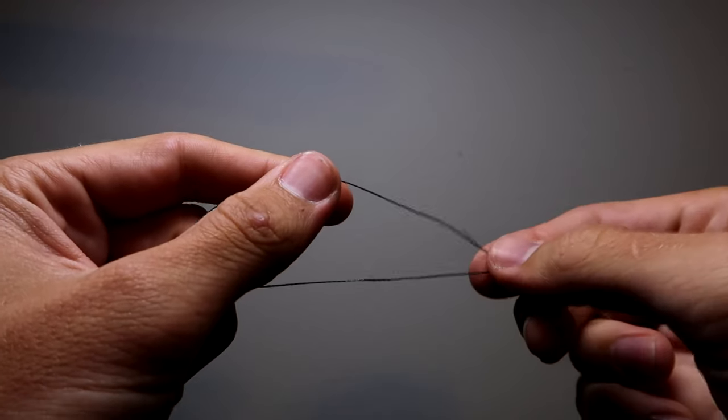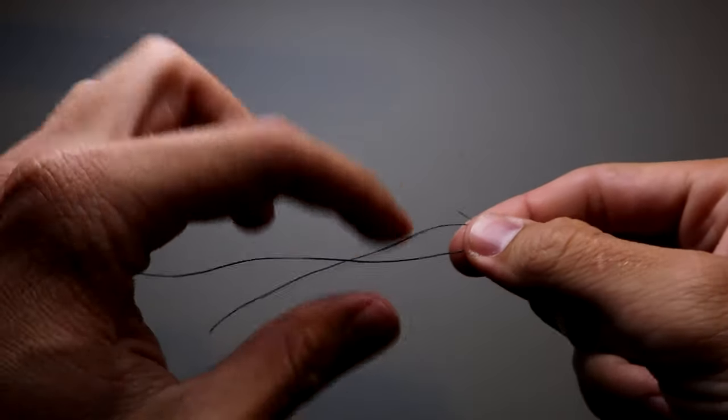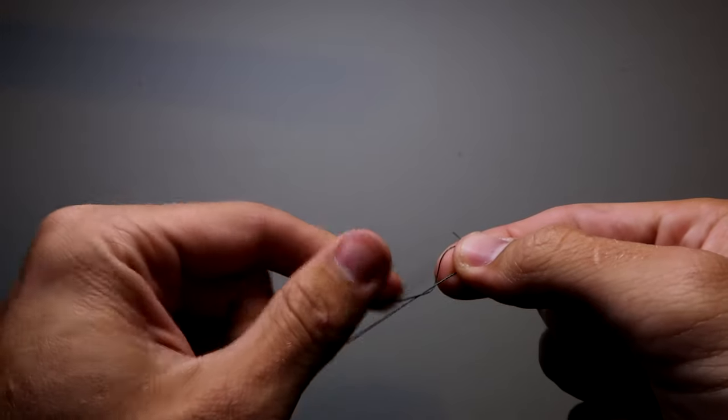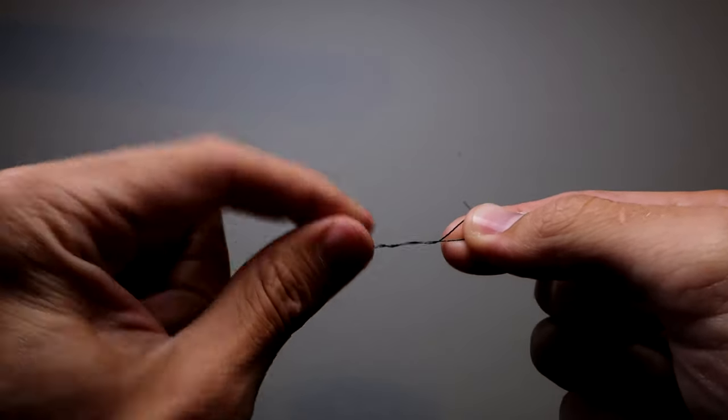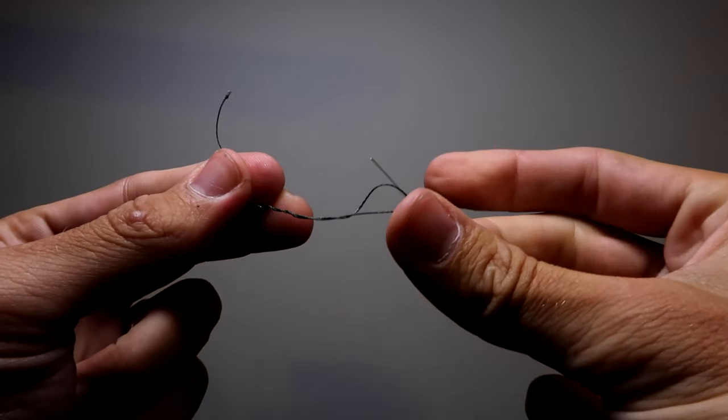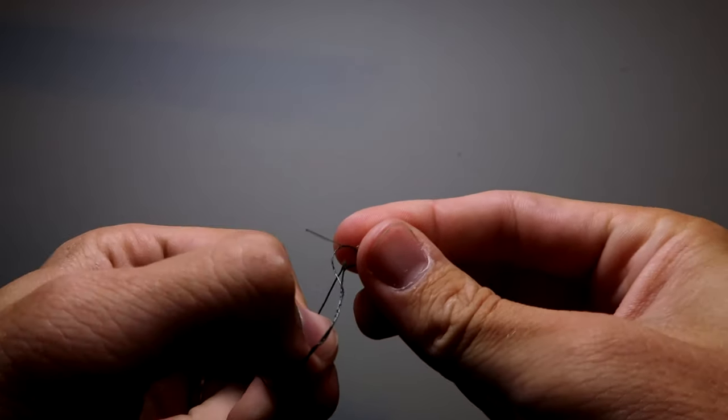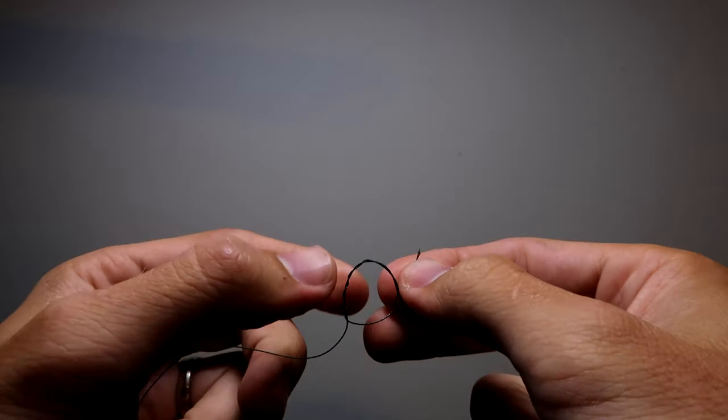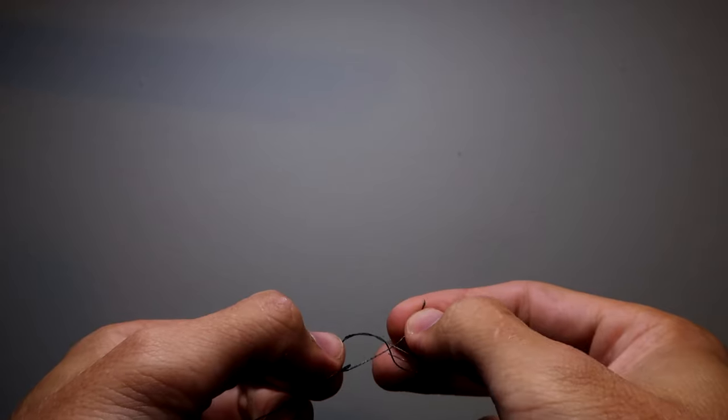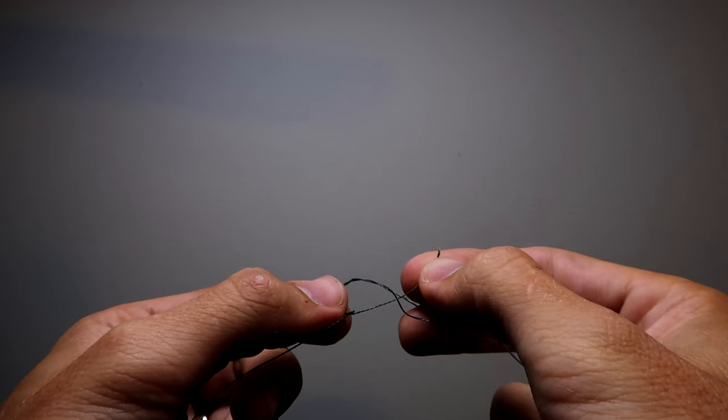Now we're going to tie our braided side here. So pinch point right here still, and then wrap with the braided line. Now I'm going to do about four to five wraps on this side, and then like you see, created a loop here. Just go back through that loop like we always do.